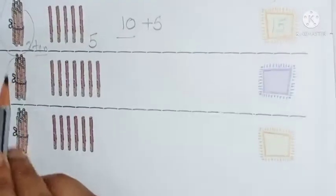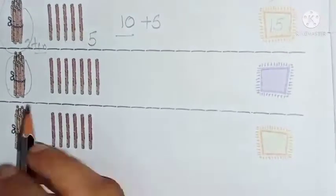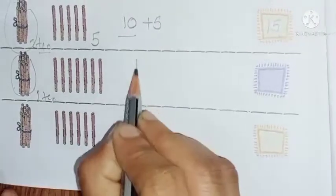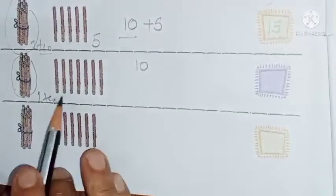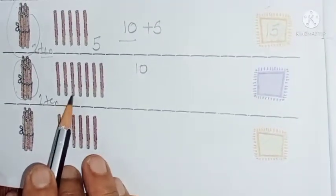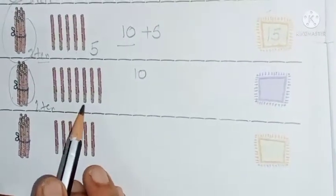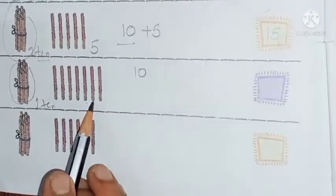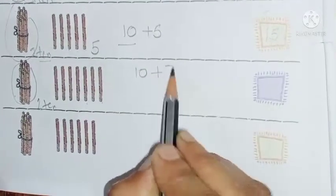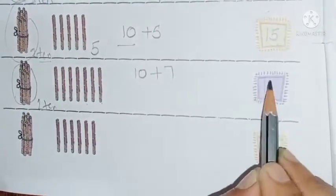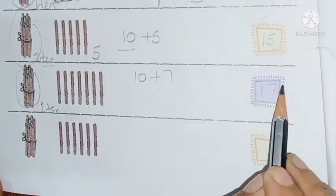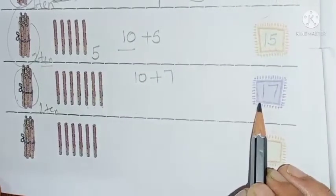Now next, again a bundle of sticks. 1 ten — that means 1 ten is equal to 10. Now we will count the 1s: 1, 2, 3, 4, 5, 6, 7. So 10 plus 7 equals how much? 17. That is 7 ones and 1 ten.